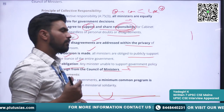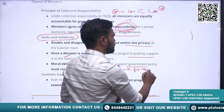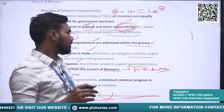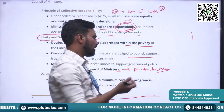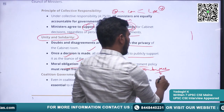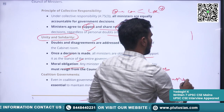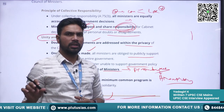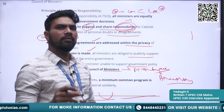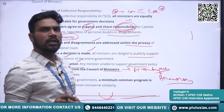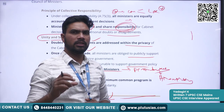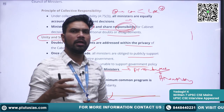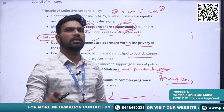A famous example is Dr. B.R. Ambedkar, who resigned from the Law Ministry when he was in disagreement with the Nehru government about Hindu personal laws. We can see many examples where individual ministers have resigned from the cabinet whenever in disagreement. There are also cases where ministers who openly expressed opposition to government decisions were asked to resign or were dismissed.